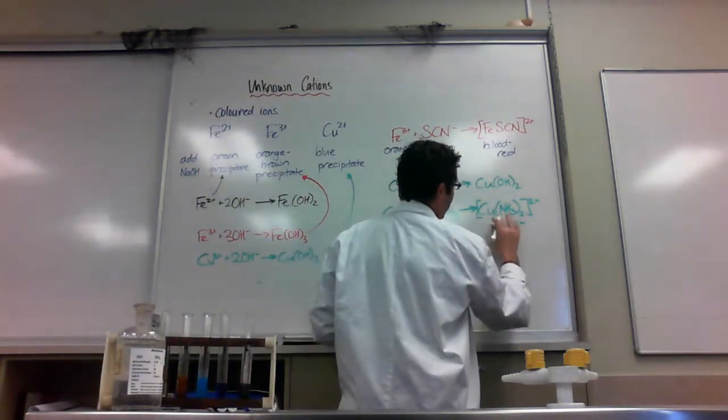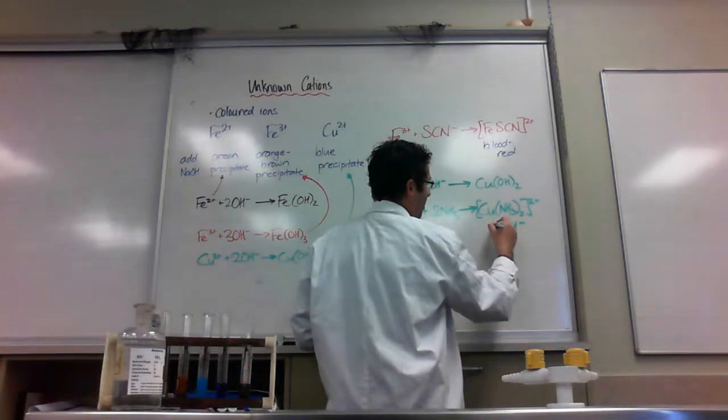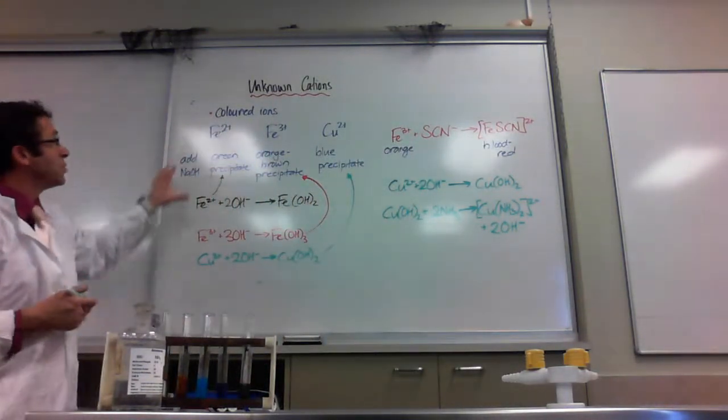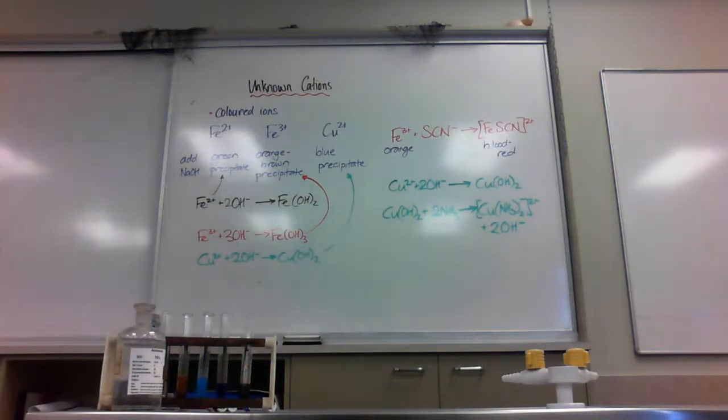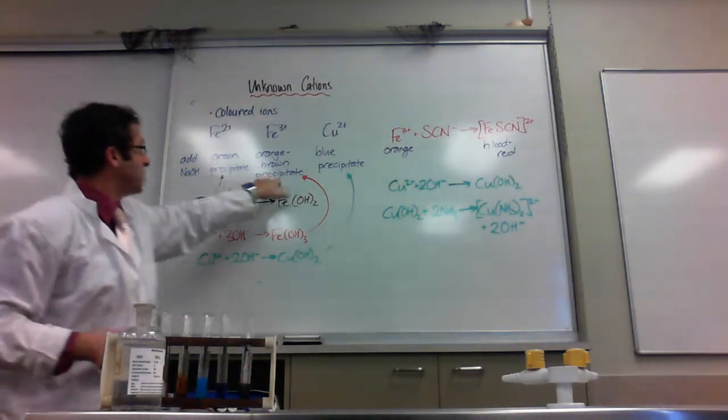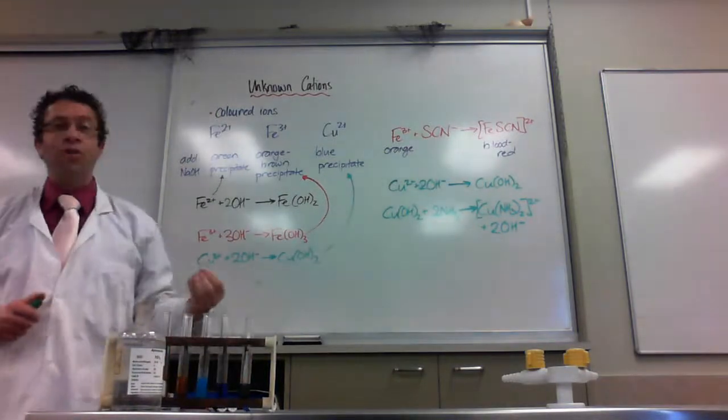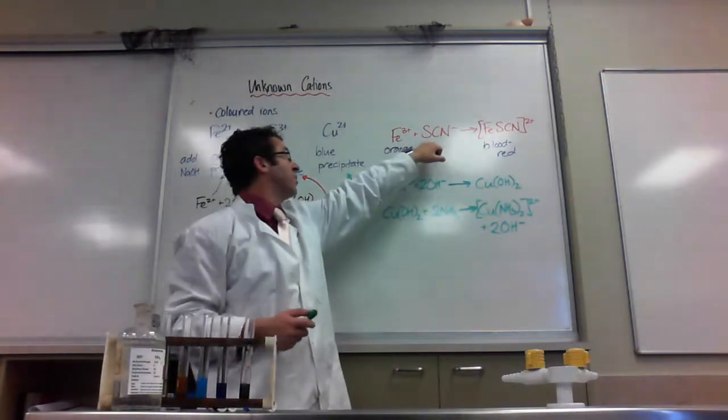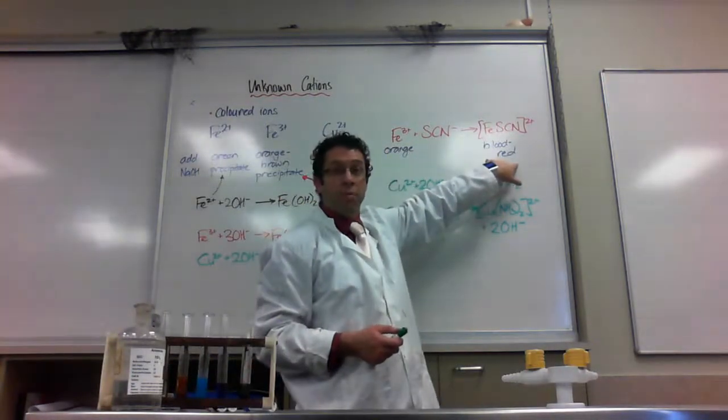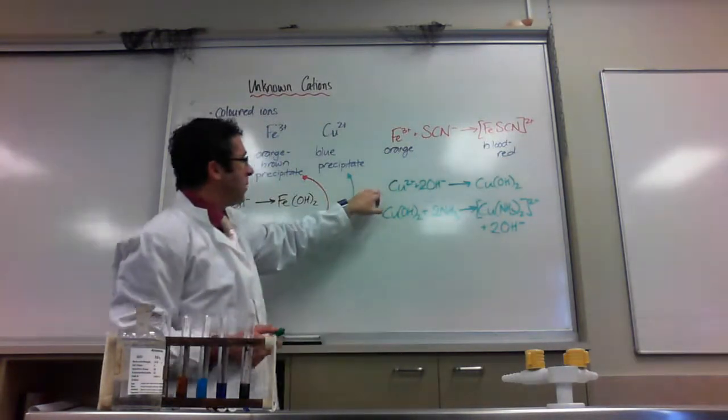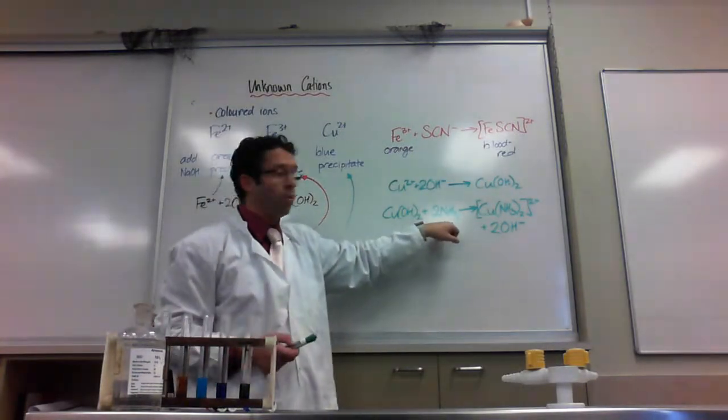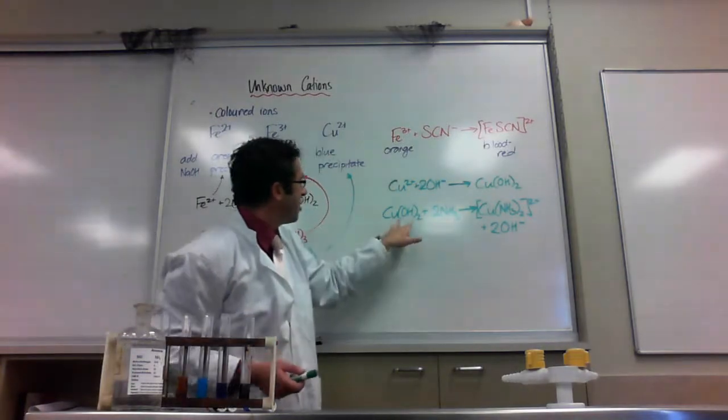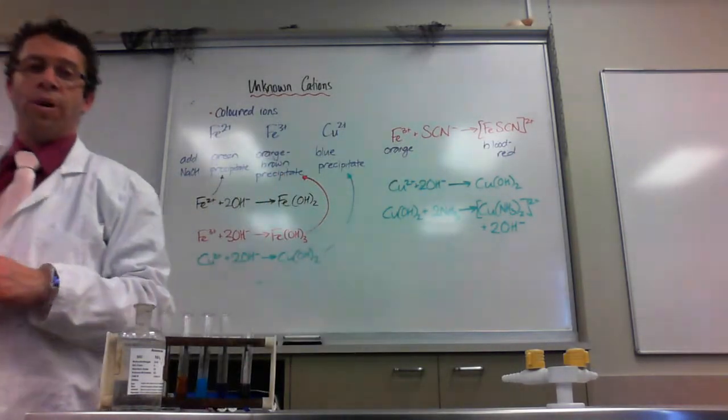So that's the ones when they've got a color. We have a look, first of all, at their reaction with hydroxide and see what precipitate they make. Then we confirm their presence. For iron 3 plus, confirm it with SCN to make this blood red complex. With copper, confirm it with concentrated ammonia, or excess ammonia, to make this complex. Don't forget the hydroxides get freed up to make it a balanced equation.